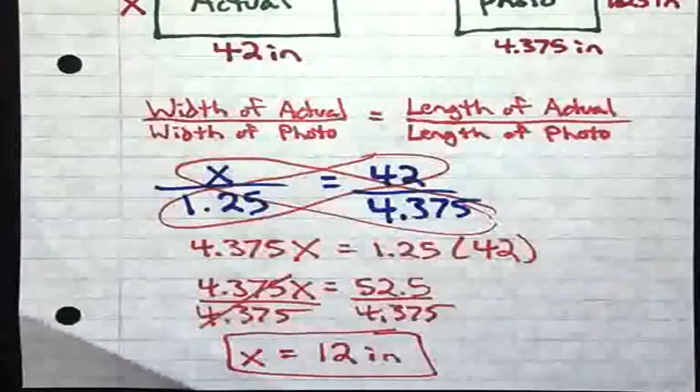So remember that this 2 colon 1 can be rewritten as 2 over 1. Which corresponds with this statement right here. This triangle DEF to triangle ABC. So this 2 is going to go with triangle DEF and 1 goes with triangle ABC. So when we try to use a proportion here,